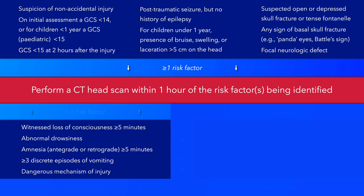Or a dangerous mechanism of injury, such as a high-speed road traffic accident either as a pedestrian, cyclist, or vehicle occupant, a fall from a height of greater than 3 meters, or a high-speed injury from an object. If more than one of these risk factors are present, then a CT scan should be performed within 1 hour of the risk factor being identified.